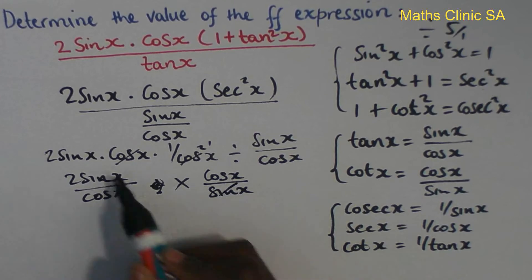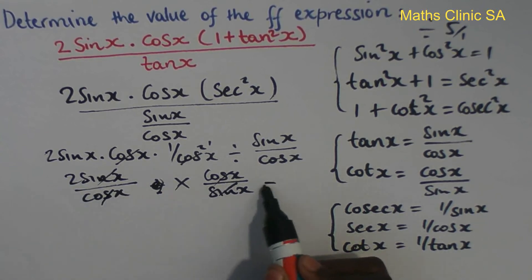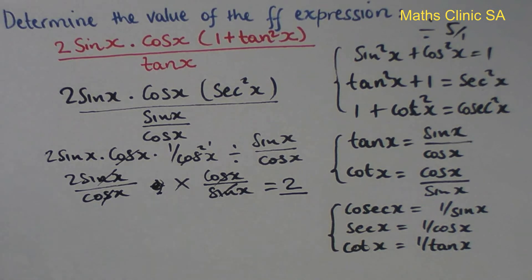And then the sin and cos cancel out. 2 times 1 is 2, 1 times 1 is 1, so it's 2 over 1, which equals 2. So the answer is 2.